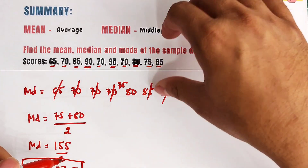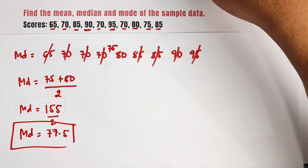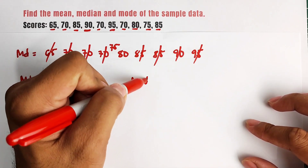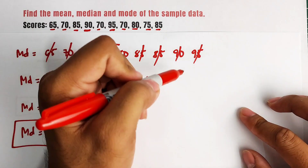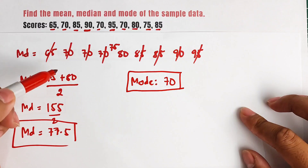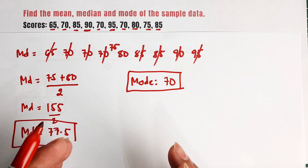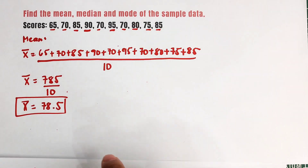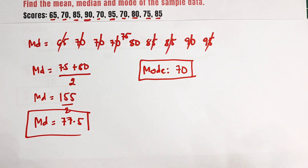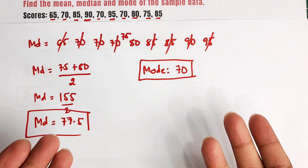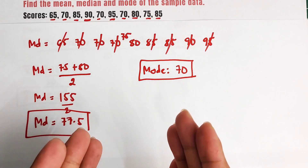So that's it for the median. Now let's find the mode. As for the mode of this problem, the mode is 70 — because it appears three times compared to the other numbers. It is the most frequent number among the given data set. So in this data set, the mean is 78.5, the median is 77.5, and the mode is 70.